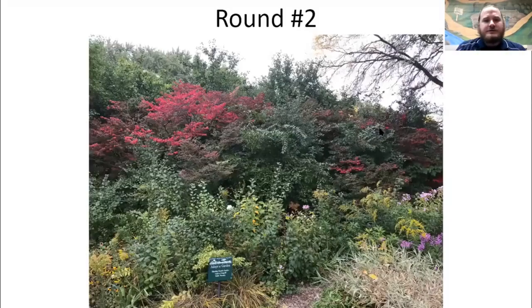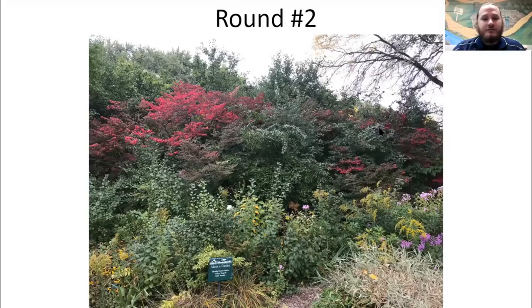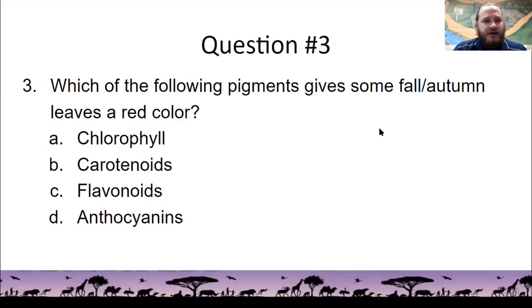All right, moving on to round two. In round two, the questions are worth two points each. Here's a photo from a garden at the Detroit Zoo. You can see the leaves starting to turn red. Speaking of leaves starting to turn red, question number three. Which of the following pigments gives some fall or autumn leaves a red color? Is it chlorophyll? Is it carotenoids? Is it flavonoids? Or is it anthocyanins?